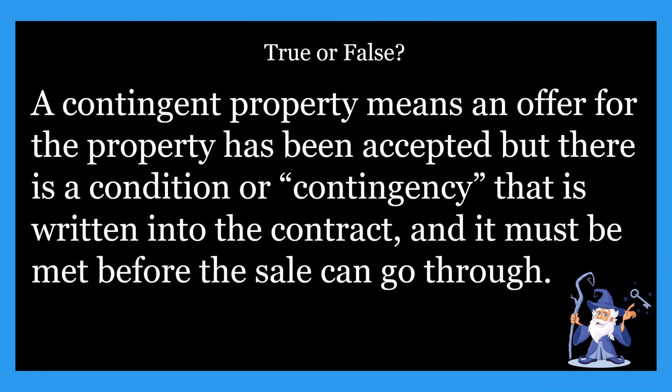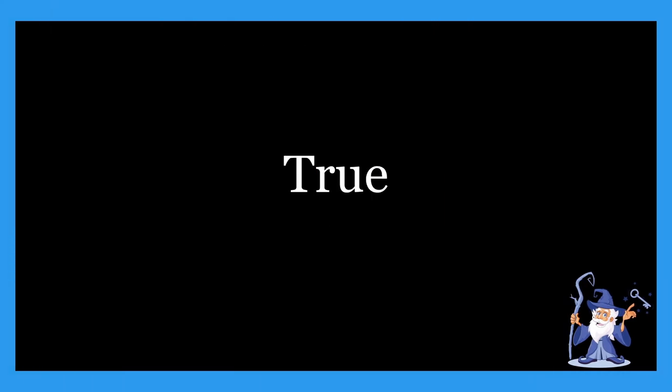Next one: a contingent property means an offer for the property has been accepted, but there is a condition or contingency that is written into the contract and it must be met before the sale can go through. Is that true or false? It is true. A contingent property means an offer has been accepted but there is a condition written into the contract that must be met before the sale can go through.